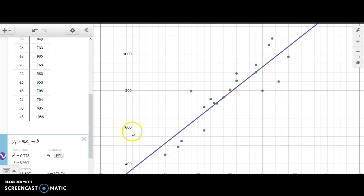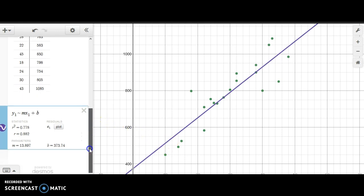And now we have our trend line, and you can see down here our correlation coefficient. Our trend line is Y equals, or calcium intake seems to equal 13.89 times their knowledge score plus 373.74. So it looks like without any knowledge at all, your intake is about this number.